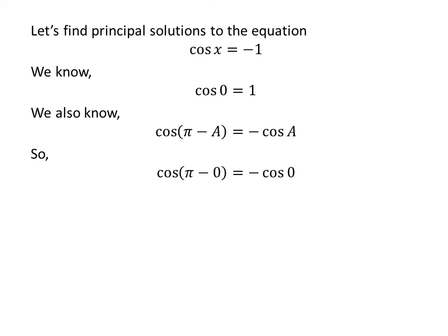Application of the above identity gives us cosine of π minus 0 is equal to minus cosine of 0. Plugging in the value of cosine of 0 gives us cosine of π is equal to minus 1.